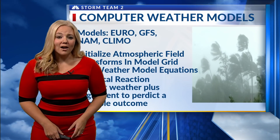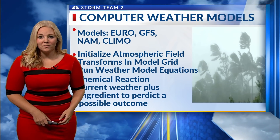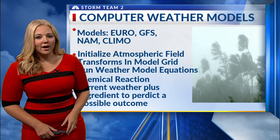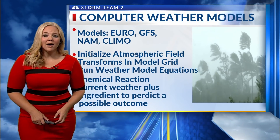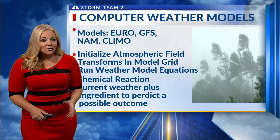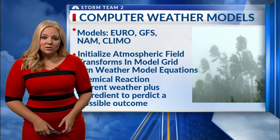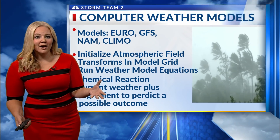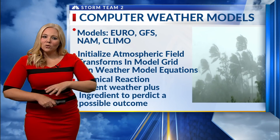Here are a few models you might hear us talk about at Storm Team 2: the Euro, or the European model; the GFS, the Global Forecasting System; NAM, the North American model; and Climo, the Climatology model. There are over 100 models total. Each one has its strengths, and each one has its weaknesses. No model is right 100% of the time, which is why meteorologists need to step in, look at all the different information, and help make a decision on your forecast.